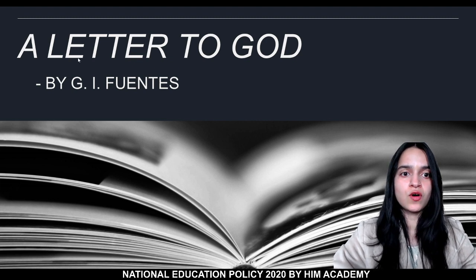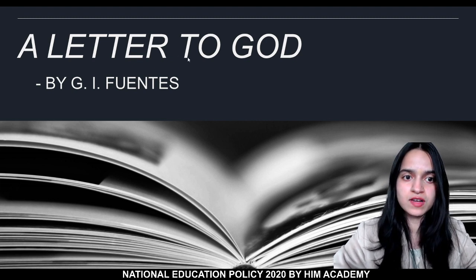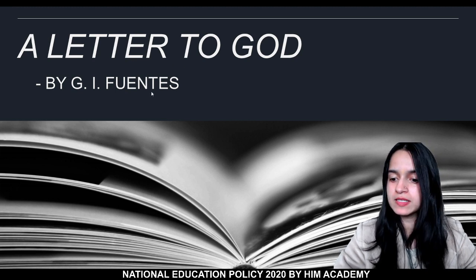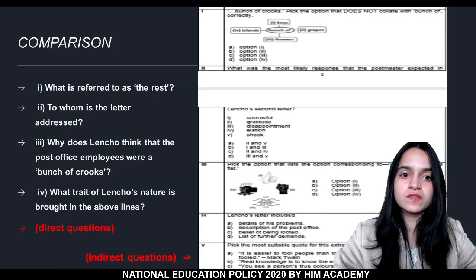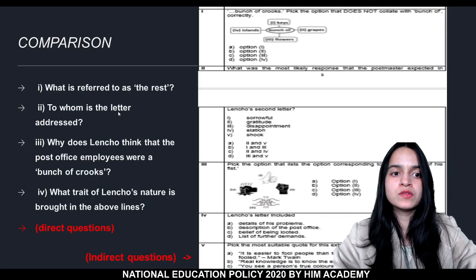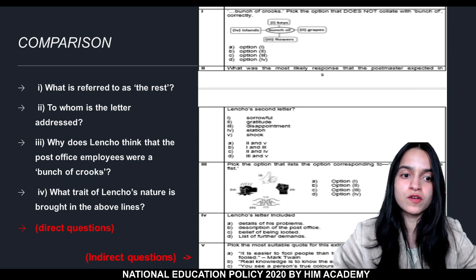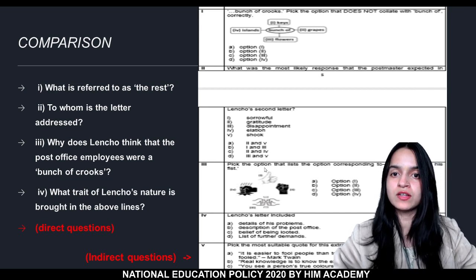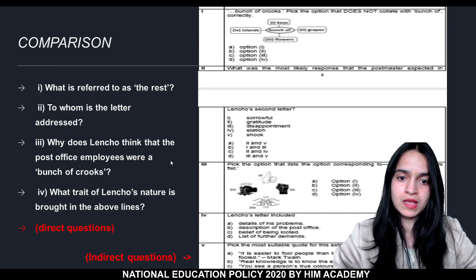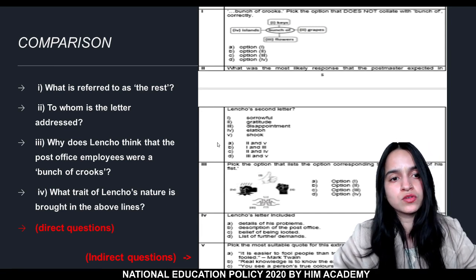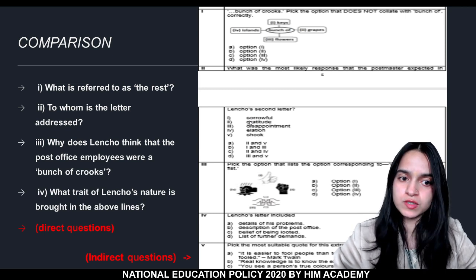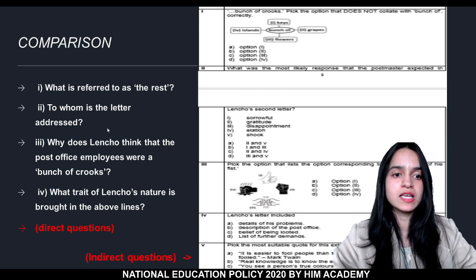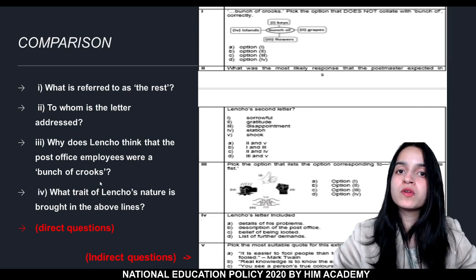As we can see the first slide, which is Chapter One from NCERT Class 10 — 'A Letter to God' by G.I. Fuentes — this is an extract from this chapter. Based on this extract, we have some questions. These questions are from the year 2020, and the PDF you see is from the year 2021. The first major difference we notice is that the 2020 questions are one-word or one-sentence type, whereas the 2021 questions are multiple choice or MCQs.